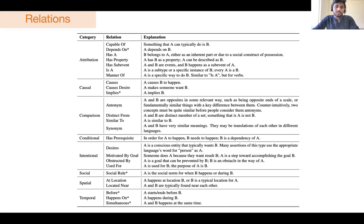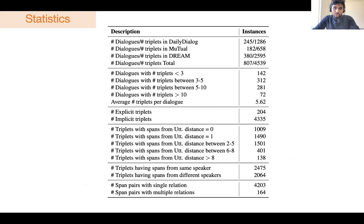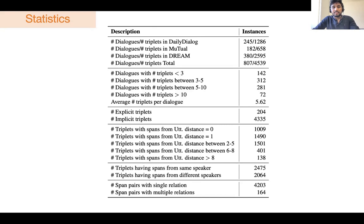The relations were also categorized into two different categories, for example attribution, causal, conditional, temporal, and several others. In terms of dataset statistics, I would like to highlight that the dataset has more than 4,500 manually annotated triplets from over 800 dialogues. Most dialogues have between 3 to 10 triplets, although some have more than 10. The distance between the utterances from which the spans are extracted can also vary; in most cases it is equal to or less than 5, but we also have a considerable number of triplets where the distance was more than 5.